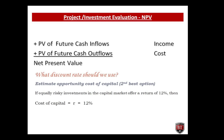Now we understand that money has a time value. To get the net present value of a project, we need the present value of future cash inflows and outflows. The next question is what discount rate should we use? To estimate it, we need to know our second-best investment option — this is called the opportunity cost of capital. For example, if equally risky investments in the capital market offer a return of 12%, then R equals 12%, and this is the discount rate we should use.